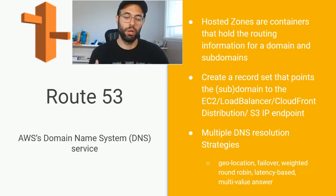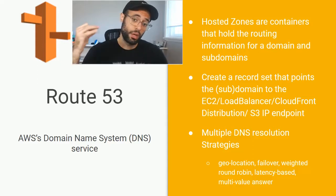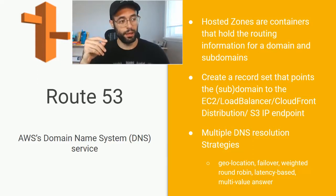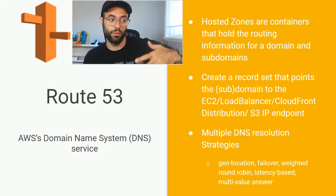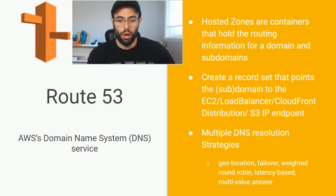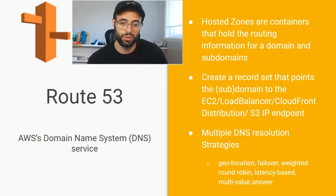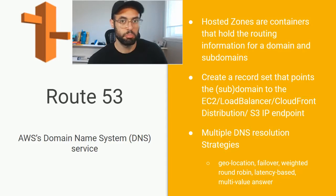Route 53 also gives you multiple routing strategies. If your traffic from location X wants foo.bar.com, you might want to point them to a CloudFront distribution, or you might want to point them to your S3 for that resource. There are also strategies for failover — if one of the hosted zones is not available. There are all kinds of strategies, though I don't actually know how in-depth they get on the test.